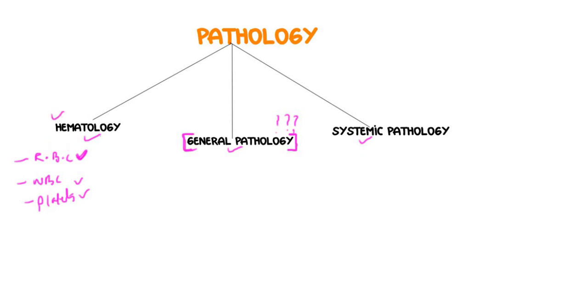Then after you cover the hematology, just come to the general pathology. In general pathology we have topics like cell injury, inflammation, neoplasias and immunity. Cell injury and inflammation are very easy and you just go through the Pathoma for these subjects.